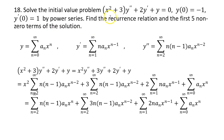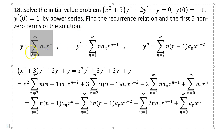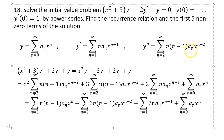Number 18: solve the initial value problem x squared plus 3 times y double prime plus 2y prime plus y equal to 0 with given initial conditions. Find the recurrence relation and the first five non-zero terms. For a power series solution, you write y as a sum with coefficients a0, a1, a2, and so on. Differentiating, the power rule brings n down and subtracts 1, so y prime starts from n equals 1. For y double prime both n equal to 0 and n equal to 1 give 0, so that summation starts from n equals 2.